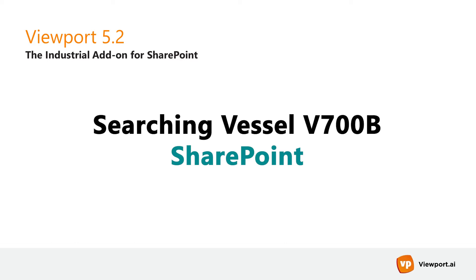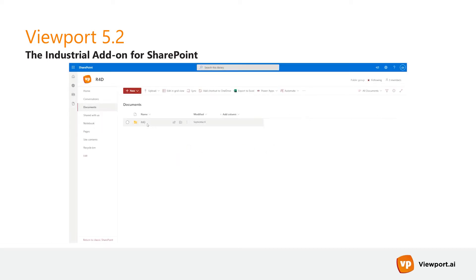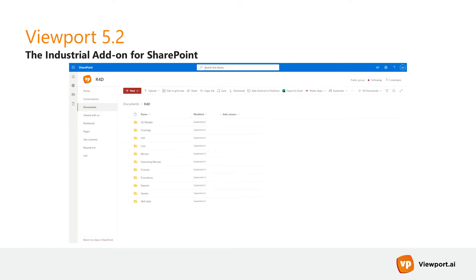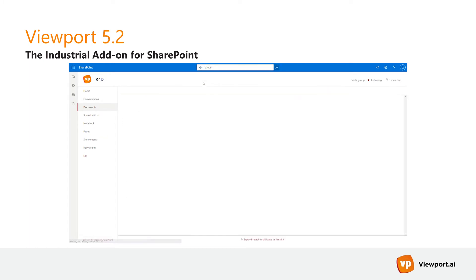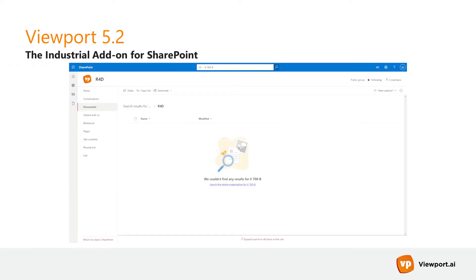For an example, let's search for documentation for a vessel called V-700B. SharePoint uses a generic search engine, and trying to use that to find documents and drawings mentioning V-700B is difficult.